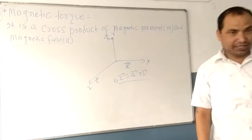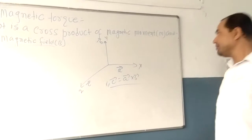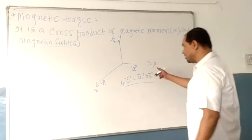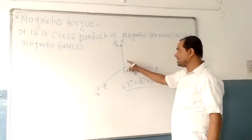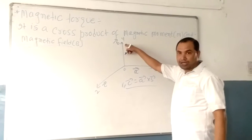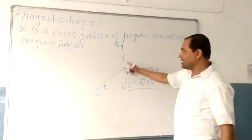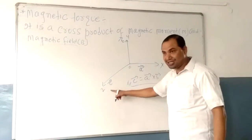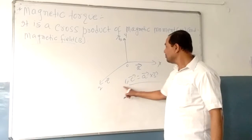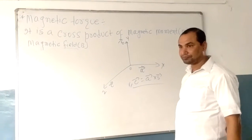Again, if vector A is acting along the x-axis and vector B is acting along the y-axis, then the resultant vector C will act along the z-axis, where vector C is equal to vector A cross vector B.